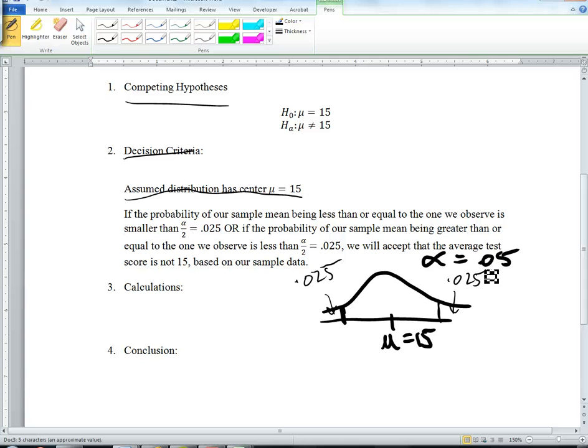So if our x-bar that we observe is out here in this tail, if it's a lot bigger than 15, or if it's a lot smaller than 15, we'll conclude that it's significantly different. Notice the consequence of doing this. We have to split the probability between the two tails, since we have no idea which direction it's going to go.